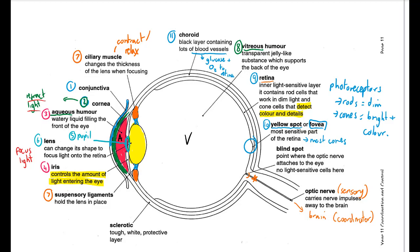The outer protective coat of the whole eye is the sclera — the whites of people's eyes. There's also a blind spot where all the cells from the retina come together to form the optic nerve, so there are no photoreceptors there. Finally, the optic nerve carries nerve impulses to the brain.